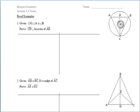For this first proof example, we're given circle O, so we know that that's the center of our circle. We're also given that angle A is congruent to angle B. In the end, we want to prove that CD is the perpendicular bisector of AB.